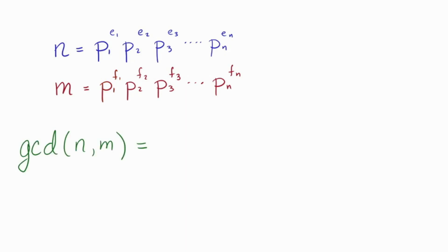Pause the video and figure out how to write this down for yourself. Okay, so here's what I had in mind. I can write the gcd of n and m as p1 to the minimum of e1 and f1, p2 to the minimum of e2 and f2, and so on.